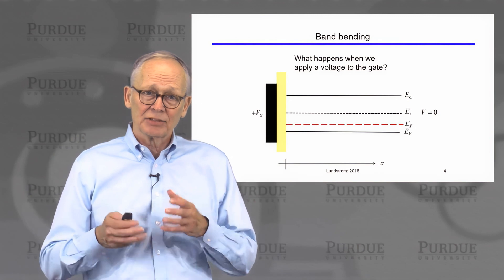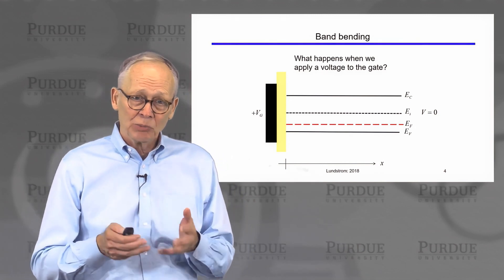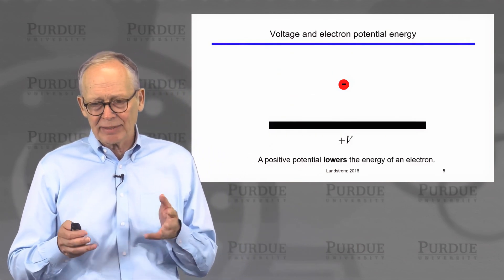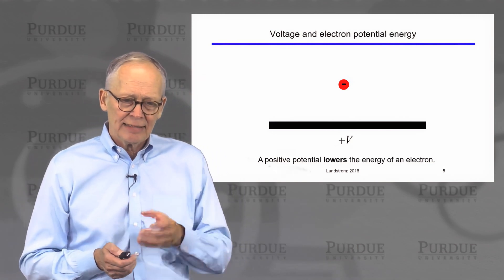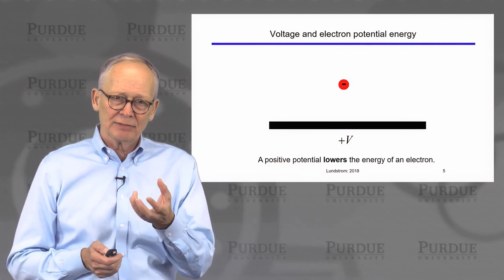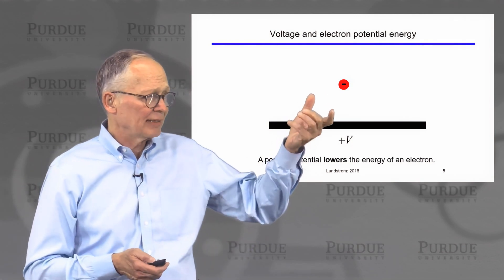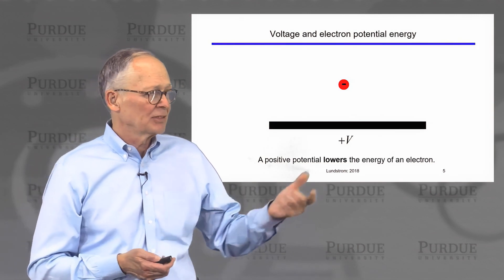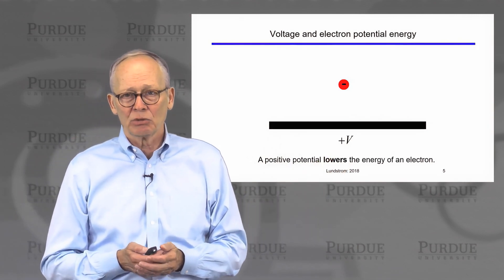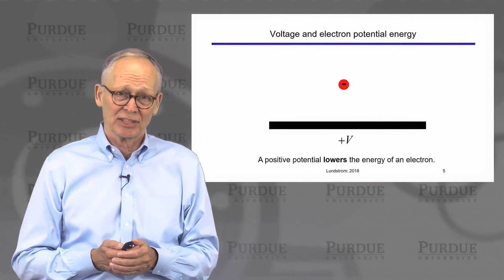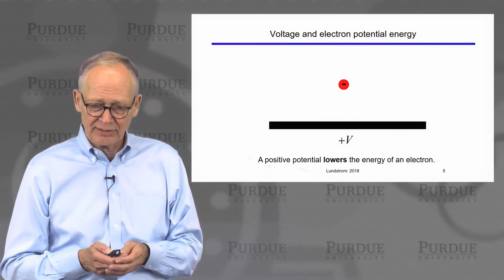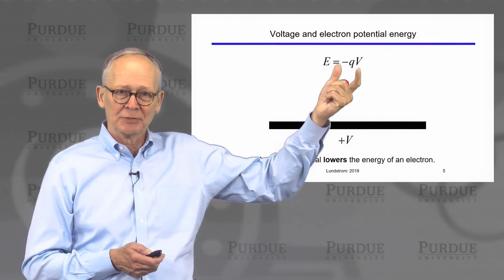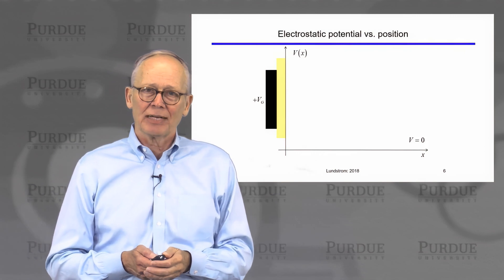What happens to this energy band diagram when we apply a voltage? If you have an electron and a positive voltage, that positive voltage would attract the electron to the plate, pull it down into a potential well, and lower the energy of the electron. So the important point to remember is that a positive potential lowers the energy of an electron because it has a negative charge. A negative potential would increase the potential energy of the electron. Energy is minus q times voltage — that will allow us to figure out how the bands will bend.